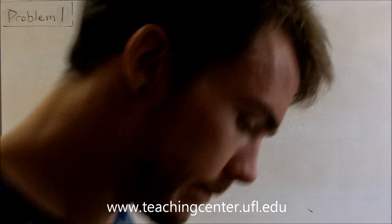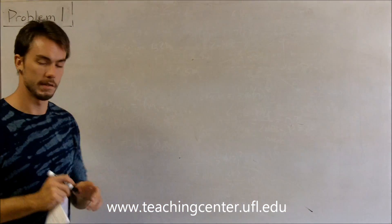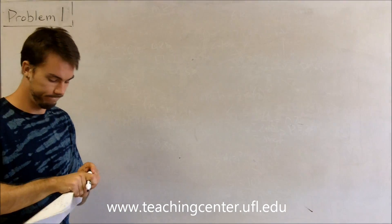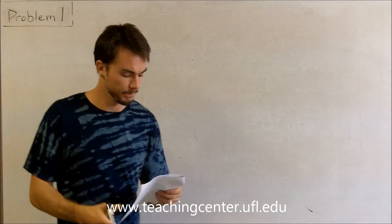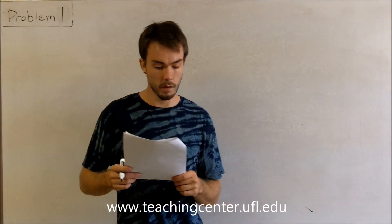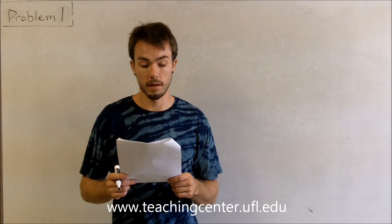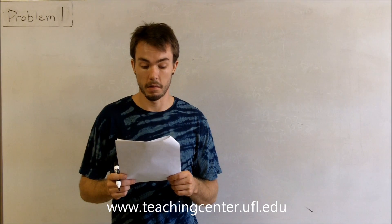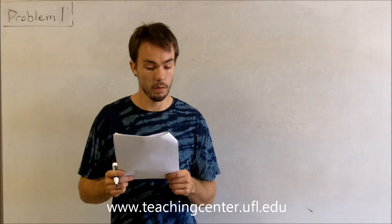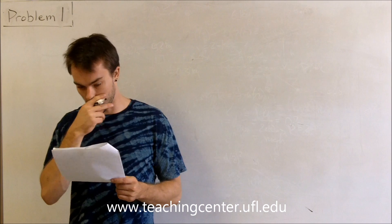All right, moving on to exam three. This is going to be the third exam, problem one. Problem one states: a meter stick on a horizontal frictionless tabletop is pivoted at the 80 centimeter mark. Two forces are applied to the stick, both of them horizontal — in the plane of the table — and perpendicular to the stick.